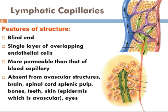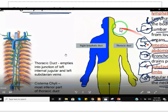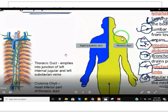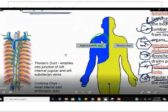Now let's talk about lymphatic ducts. There are right and left; the left is the thoracic duct, which drains the most lymph. The right side covers the right thorax, head, neck, and drains via the right lymphatic duct.